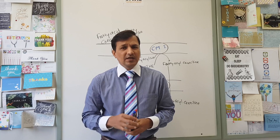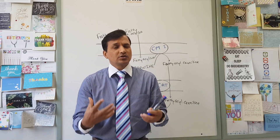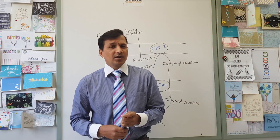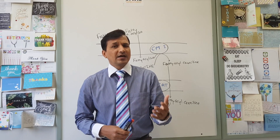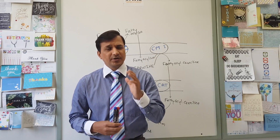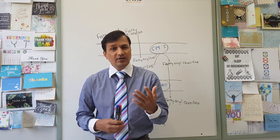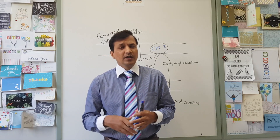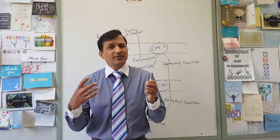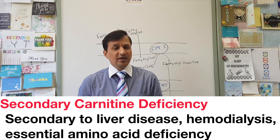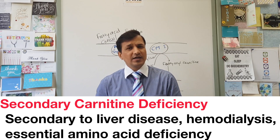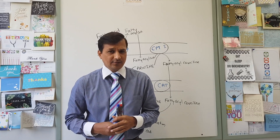Secondary carnitine deficiency is secondary to other disorders. In liver disease, carnitine biosynthesis is decreased because carnitine is synthesized from lysine and methionine in the liver. If a person is undergoing hemodialysis due to chronic or acute renal failure, there is loss of carnitine in the hemodialysate. Deficiency of essential amino acids — lysine and methionine — can also lead to secondary carnitine deficiency.